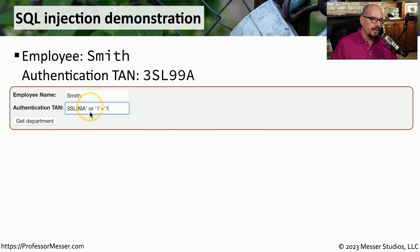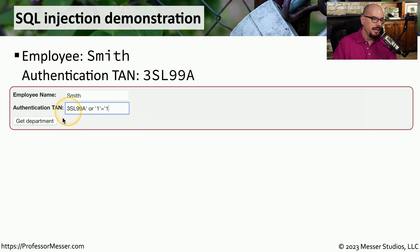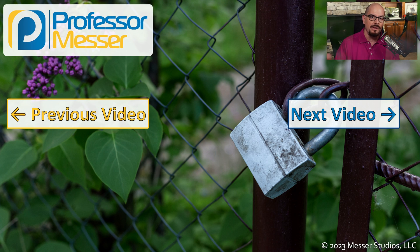We'll use the same username and transaction authentication number, but include additional injected code: an apostrophe, OR '1' = '1'. So we're asking for everything where the transaction authentication number is 3SL99A, or any place where 1 happens to equal 1. Since 1 does equal 1, when we click Get Department, it provides us with everything in the database, and we effectively now have complete control of all of this data.